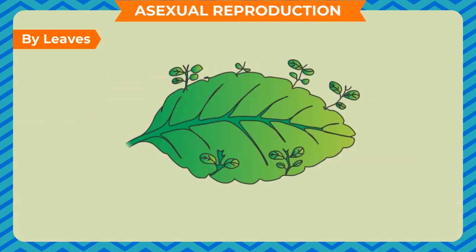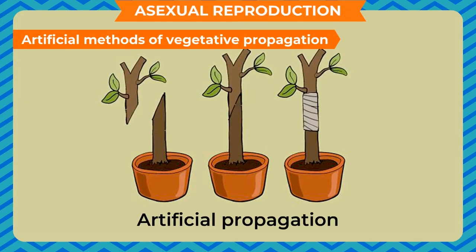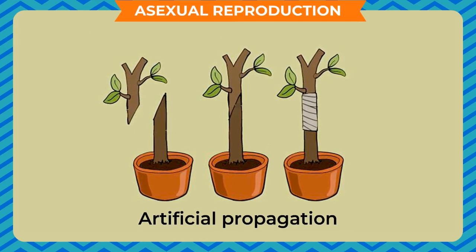By Leaves: In case of plants like bryophyllum, small buds arise along the margin of the leaf which later give rise to new plants. When the new plants grow up, the old leaves fall off.